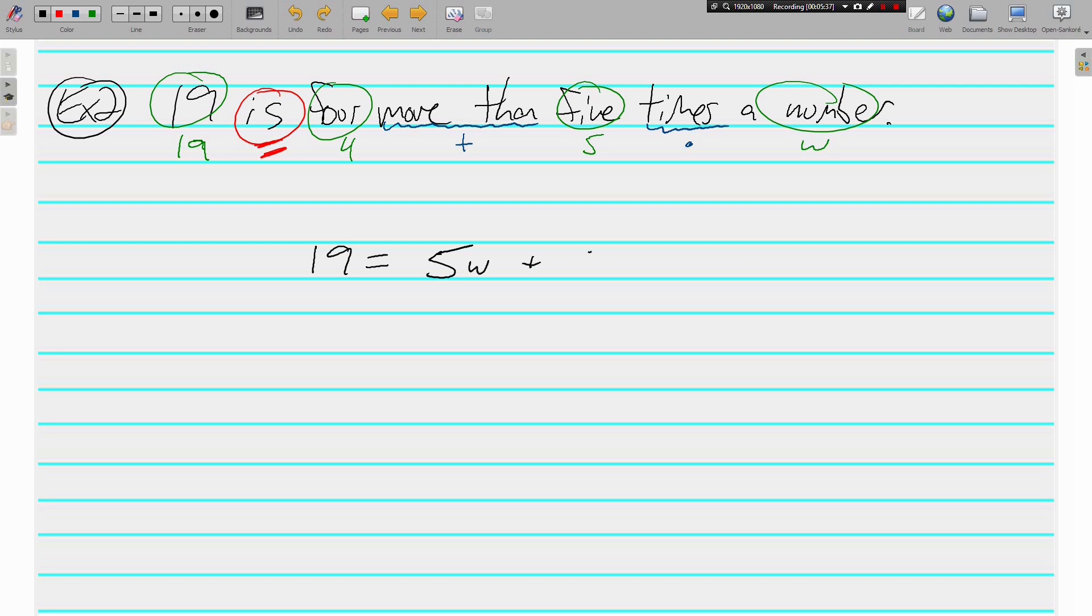Instead of using that dot, I'm just going to put the five and the w next to each other. And personally, I like when it's four more than, I like to be plus four. But you could also do four plus 5w on the right side, and you're going to get the same answer. Then we solve. Opposite of adding four is subtracting four. And those will cancel. So we get fifteen is equal to 5w. Divide both sides by five, and we get three is equal to w.